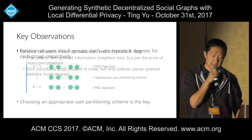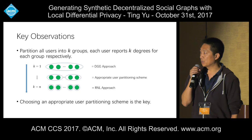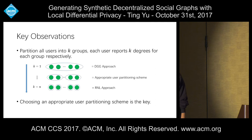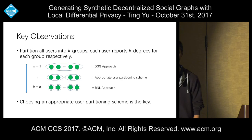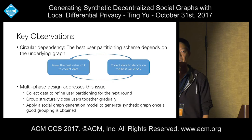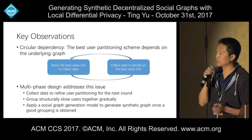These two approaches represent two extremes. In a general framework, we partition all users into k groups and ask each user to report their degree to each group—k degree values total. If k=1, everyone is in one group, and it becomes the degree-based approach. If k=n, each user is their own cluster, and we get the randomized neighbor list approach. Since both extremes are problematic, we need to find an appropriate partition of nodes to balance the noise introduced against the structural information captured.